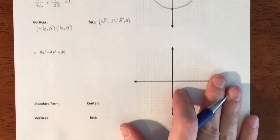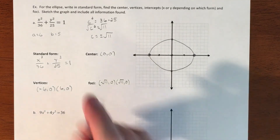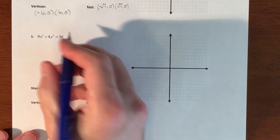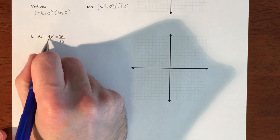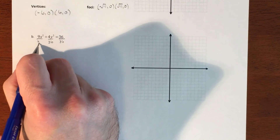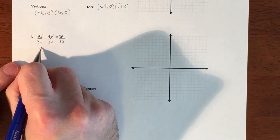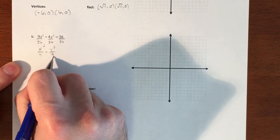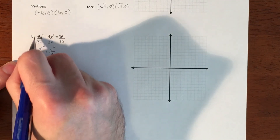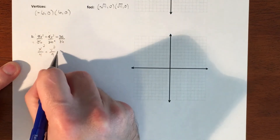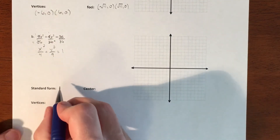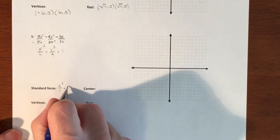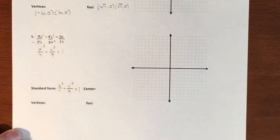The second graph is not in standard form, so we need to make it equal to 1 by dividing every term by 36. This simplifies to x squared over 4 plus y squared over 9 equals 1. That is your standard form — 4 goes into 36 nine times, and 9 goes into 36 four times.